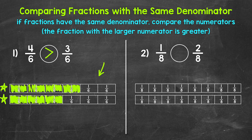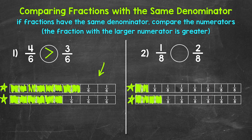Let's shade the fraction strips to show this and help us see this. We'll start with one-eighth right here — so one-eighth. And then two-eighths will be right here: one-eighth, two-eighths. So now we have a visual of our comparison. We can see that two-eighths is greater than one-eighth using those fraction strips. Our comparison symbol goes like this, and we can read this from left to right as one-eighth is less than two-eighths.